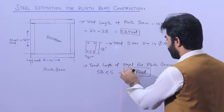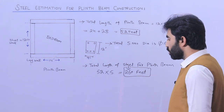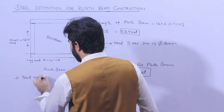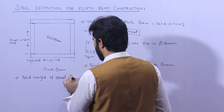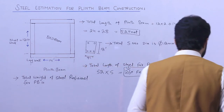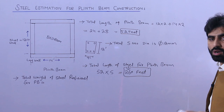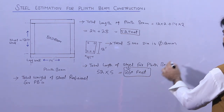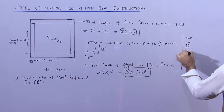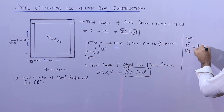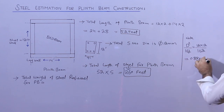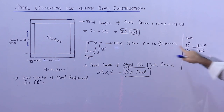The total length of steel is 260 feet. Now I need to find the total weight of steel required for the plinth beam. Use the formula: D² ÷ 162. So 12 × 12 ÷ 162 gives you 0.88 kg per meter. This is the unit weight of steel for 12 millimeter diameter bar.